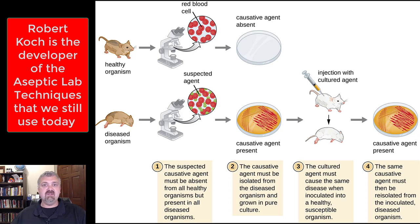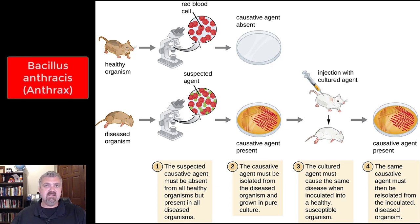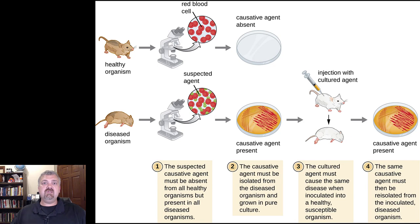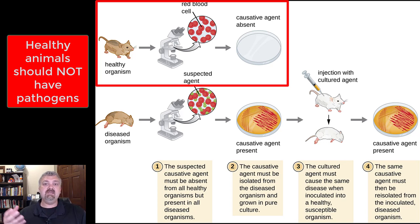You'll see why he had to develop aseptic techniques in order for his postulates to work. He would have first used these postulates to prove that the causative agent of anthrax was the bacterium known as Bacillus anthracis. But we can use it in quite a few cases. I really want to focus on when we can't use it as well. Koch's postulates are a way to try to prove that organism A causes disease Y.